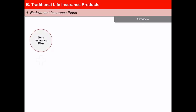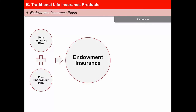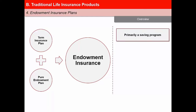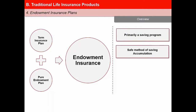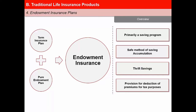An endowment insurance contract is actually a combination of two plans: a term insurance plan plus a pure endowment plan. Thus it has both a death and a survival benefit component. The contract is a combination of decreasing term insurance and an increasing investment element. People buy endowment plans as a sure method of providing security in old age or for meeting specific purposes like having an education fund at the end of say 15 years, or a fund for meeting marriage expenses of one's daughters. This plan is also made attractive because of the provision for deduction of premiums for tax purposes.